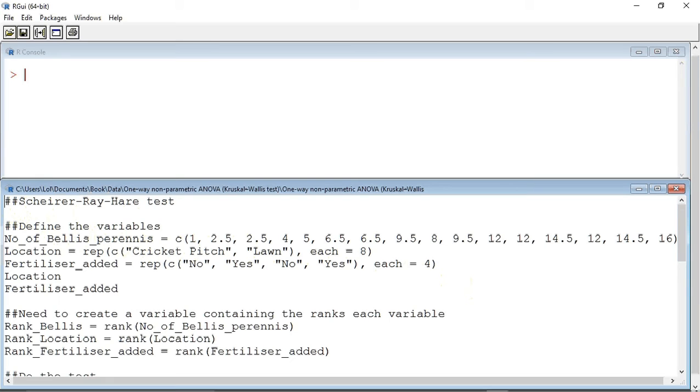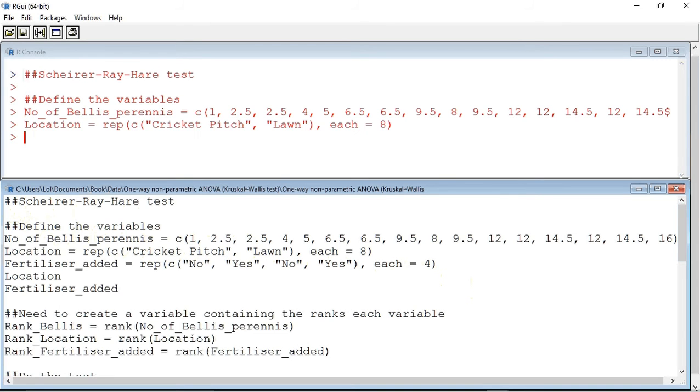Let's now define the variables. The first variable, number of Bellis perennis plants, is defined using the C operator. The second variable, location, is defined using the rep function and the each attribute. In this case, it should give us cricket pitch eight times followed by lawn eight times. We are using the same command for fertilizer added.